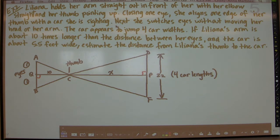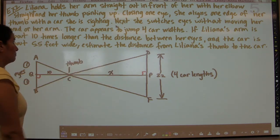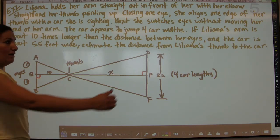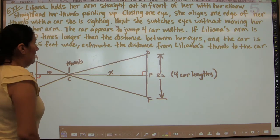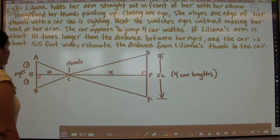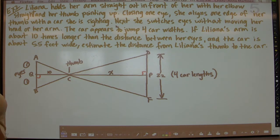Our next example is a word problem. Liliana holds her arm straight out in front of her with her elbow straight and her thumb pointing up. Closing one eye, she aligns one edge of her thumb with a car she is sighting. She then switches eyes without moving her hand or arm, and the car appears to jump four car widths. Her arm is about ten times longer than the distance between her eyes, the car is about 5.5 feet wide — estimate the distance from Liliana's thumb to the car.